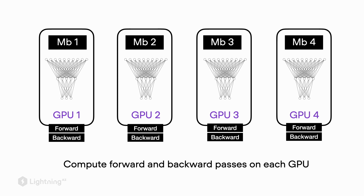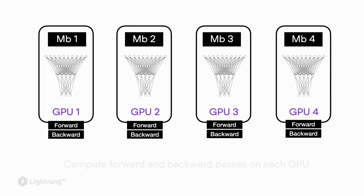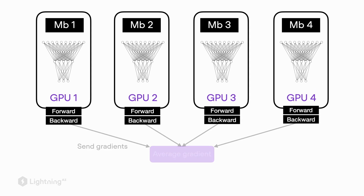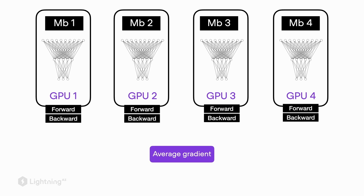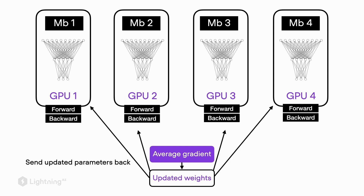Each GPU operates independently on a copy of the model. Then, after performing the forward and backward passes, we average the gradients, use the averaged gradient to update the weights, and send the weights back to the GPUs to update the model copies. That is how data parallelism works in a nutshell.